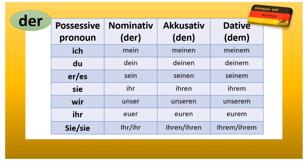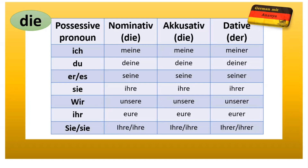What you can notice here is that the endings follow a pattern. In accusative, the article is 'den', so all the endings are '-en'. Similarly in dative, the article is 'dem', so the endings are '-em': meinem, deinem, seinem. It depends on the article ending. For nominative and accusative, masculine remains the same, so the possessive pronoun also remains the same. But in dative it becomes 'dem', so the ending changes accordingly.